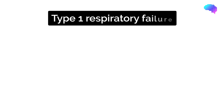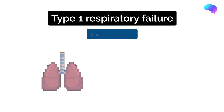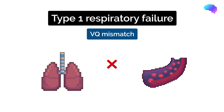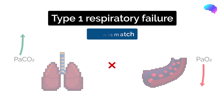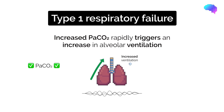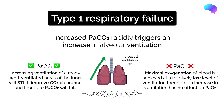Type 1 respiratory failure occurs as a result of ventilation-perfusion, or VQ, mismatch. The volume of air flowing in and out of the lungs is not matched with the flow of blood to the lung tissue. As a result of the VQ mismatch, PaO2 falls and PaCO2 rises. The rise in PaCO2 rapidly triggers an increase in a patient's overall alveolar ventilation, which corrects the PaCO2, but not the PaO2, due to the different shape of the CO2 and O2 dissociation curves.